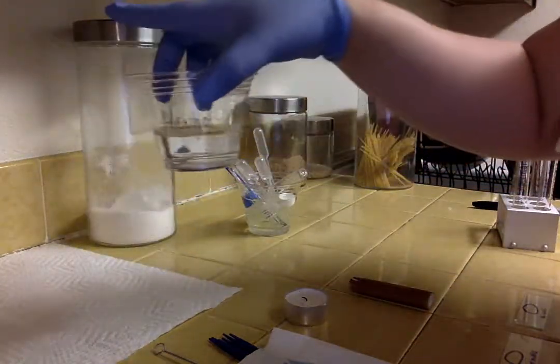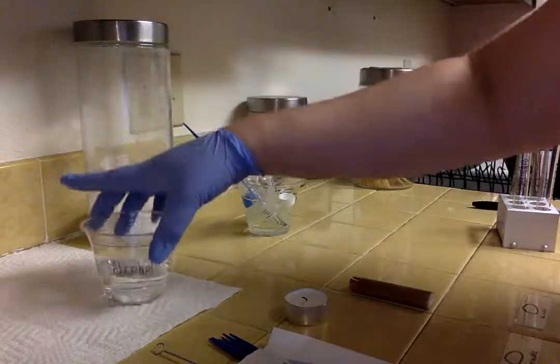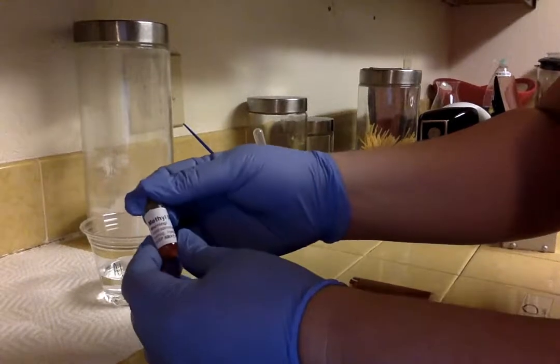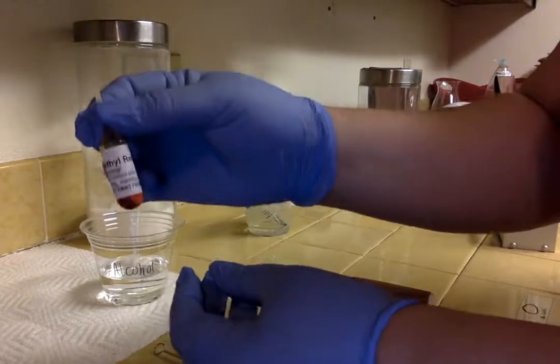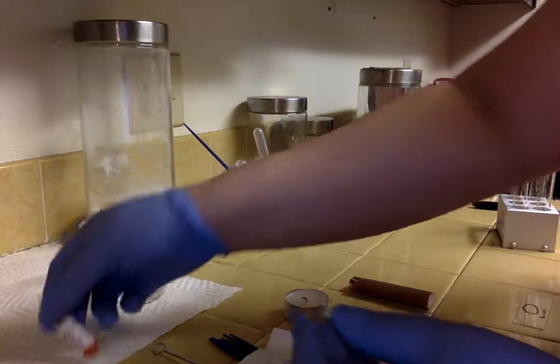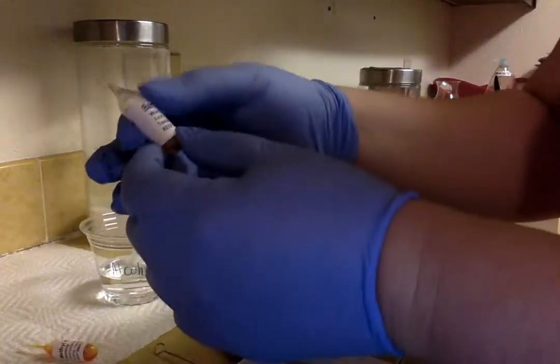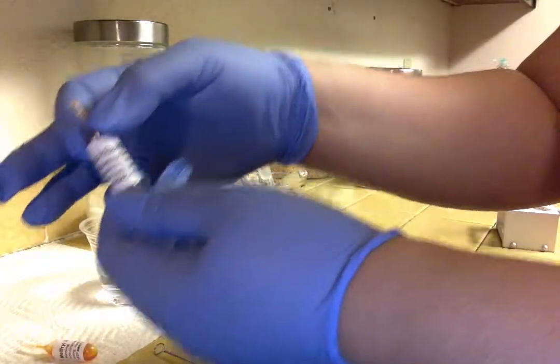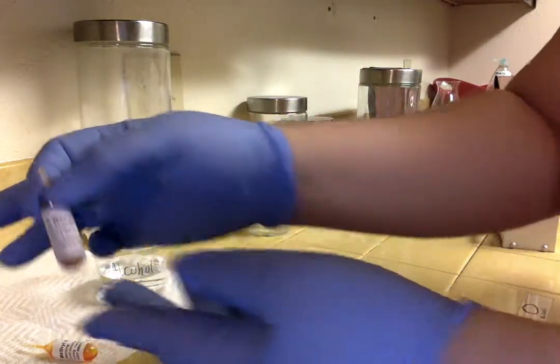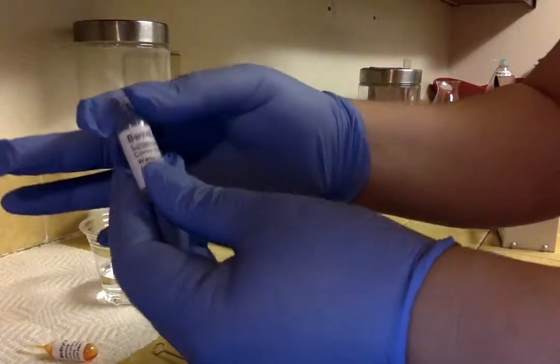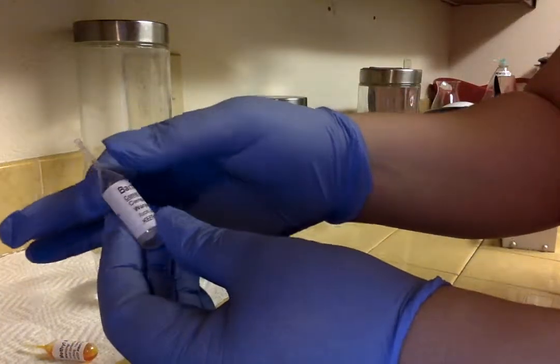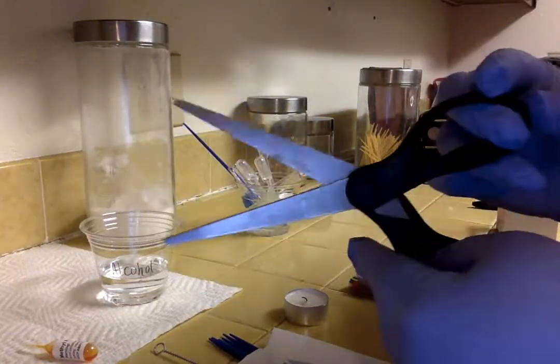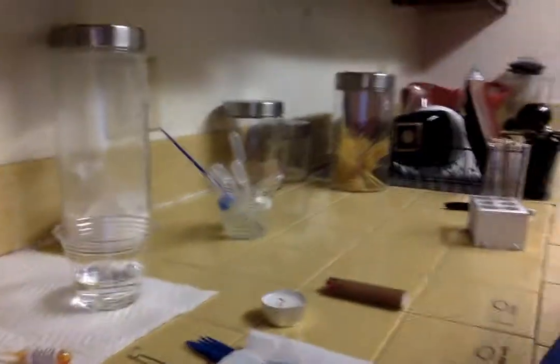I have my alcohol here. And then I have the dye that I used today, the methyl red. So that was for the first experiment. Reagent A was for the second one, and Reagent B was also for the second one. My scissors and my clean workspace.